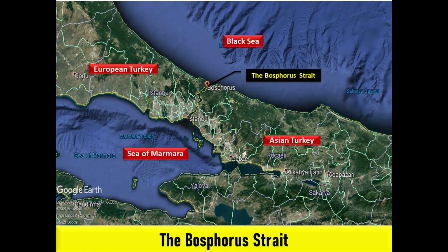The Bosporus Strait connects the Black Sea to the Sea of Marmara. It also separates Asian Turkey from European Turkey, thus separating the two continents. Bordered on both sides by the massive city of Istanbul, the strait is one of the planet's most strategic waterways.